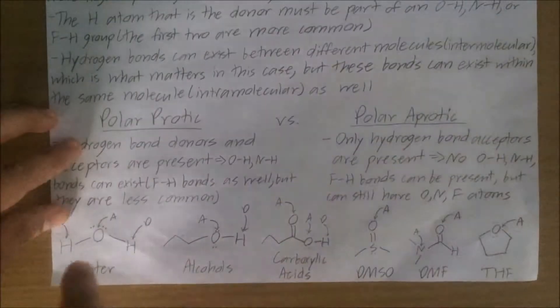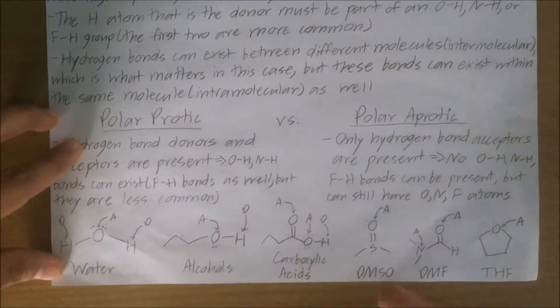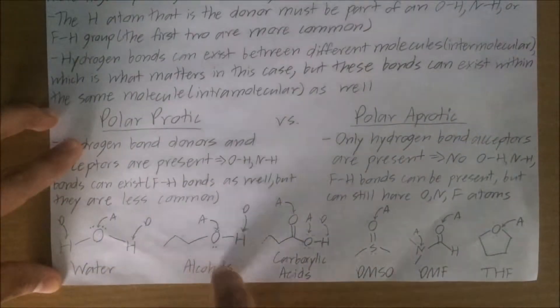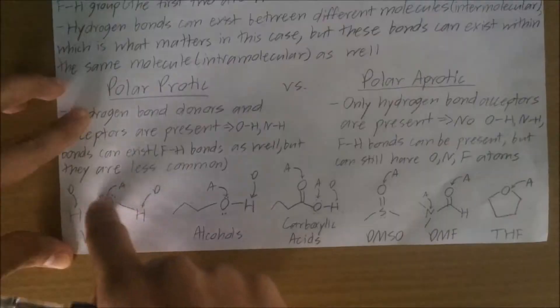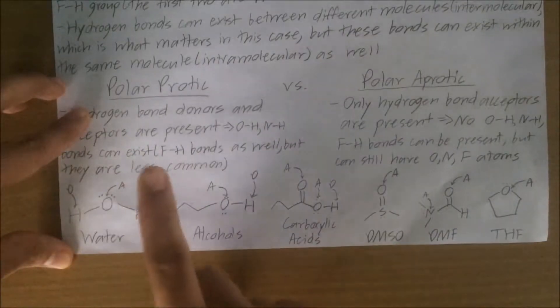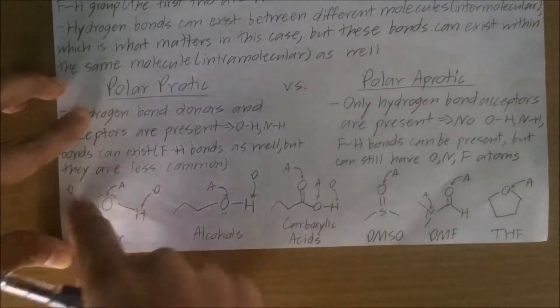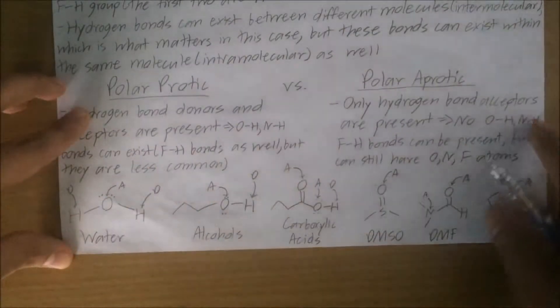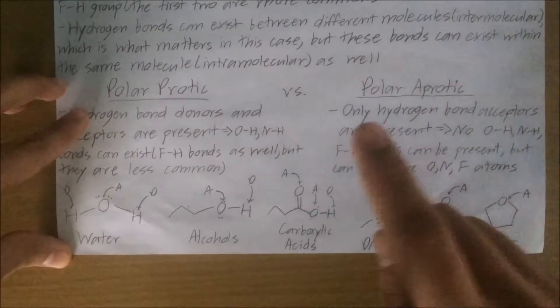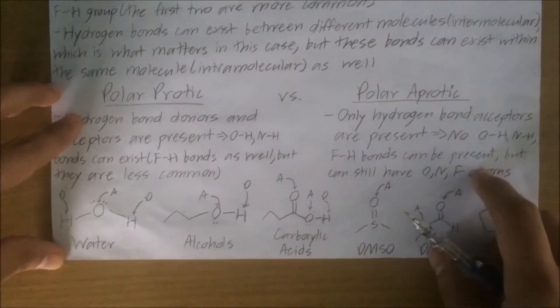Here are some main examples of polar protic solvents: water, alcohols, and carboxylic acids. The A represents the acceptor atom, while the D represents the donor atom.